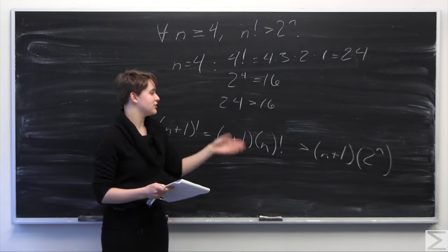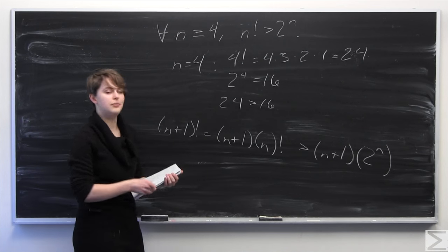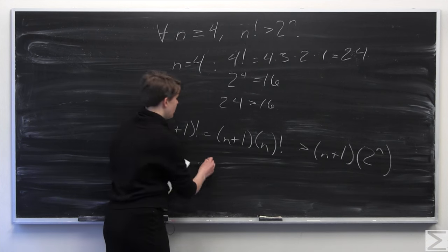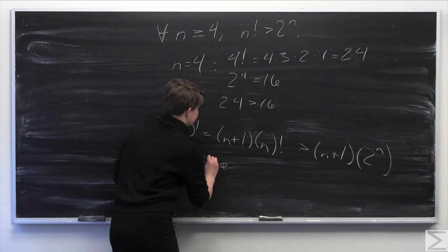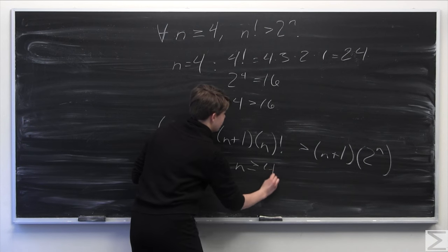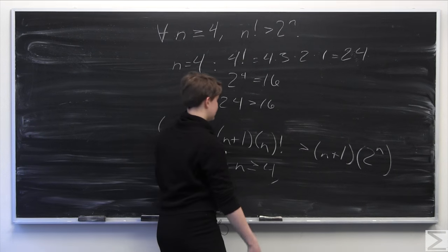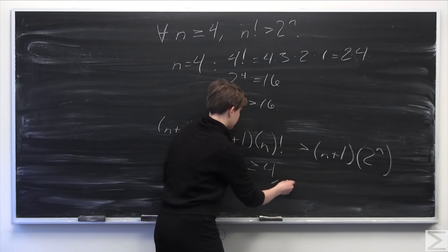And also, kind of another clever little trick here that might not immediately occur to you is that we know that since n is greater than or equal to 4, from the beginning statement, we know that n plus 1, so 4 plus 1 is always greater than 2, or 4 greater than or equal to 4, always bigger than 2. So we know that n plus 1 here is always going to be bigger than 2.